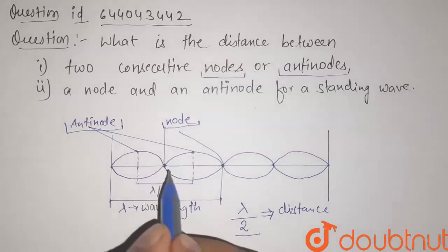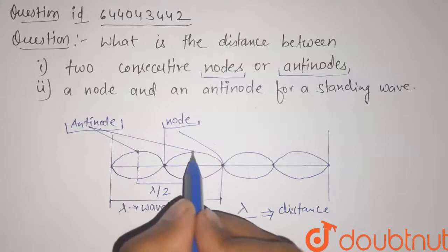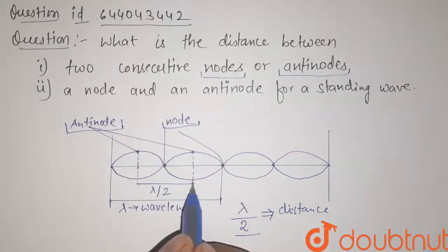Now let us check also for antinodes. So here this is our antinode and this is our another antinode, and we can see that it is half of the wavelength. So it will also be lambda by 2.